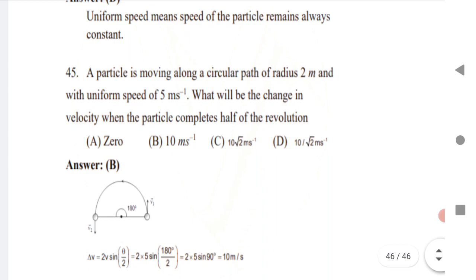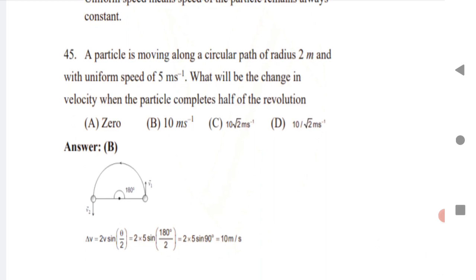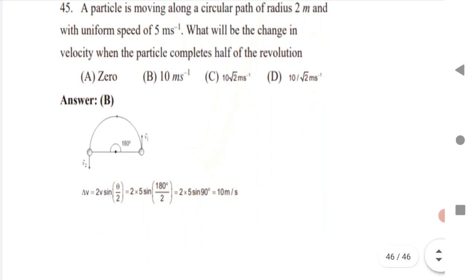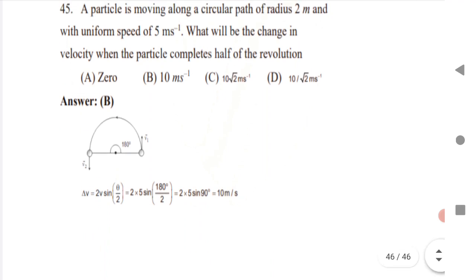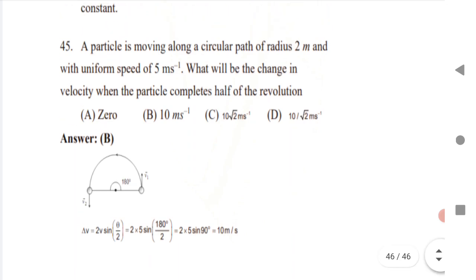Last question: a particle moves along a circular path of radius 2 m with uniform speed 5 m/s. What is the change in velocity when the particle completes half a revolution? Formula: Δv = 2v·sin(θ/2). For half revolution, θ = 180°, so Δv = 2 × 5 × sin 90° = 2 × 5 × 1 = 10 m/s.